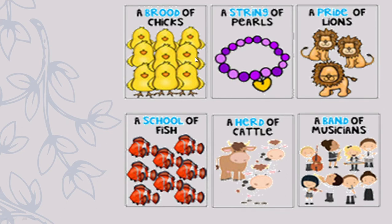A brood of chicks, a string of pearls, a pride of lions — when we see collectively some lions, there is a pride of lions. A school of fish. A herd of cattle — when we see cattle we can say here is a herd of cattle. When there are many musicians together, it is called a band. So the collective nouns here are: brood, string, pride, school, herd, and band. You should learn which collective noun goes with which common noun. A herd is of cattle.